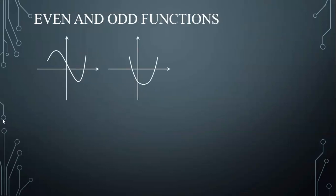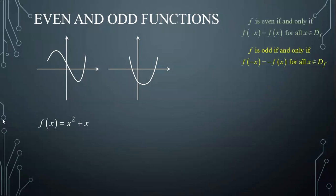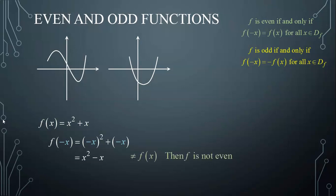But there exist many functions whose curves are not symmetrical with respect to the y-axis nor the origin. Such functions are neither odd nor even. For example, given the function f(x) equals x squared plus x. To check if a function f is even or odd, we find f(-x) and compare it to f(x). I find f(-x) by replacing all x's in f(x) by negative x. Negative x all squared is x squared, which leads me to x squared minus x. This is clearly not f(x), so the function is not even. Factoring out a negative, the expression is also not negative f(x), so the function is not odd. Consequently, the given function is neither odd nor even.